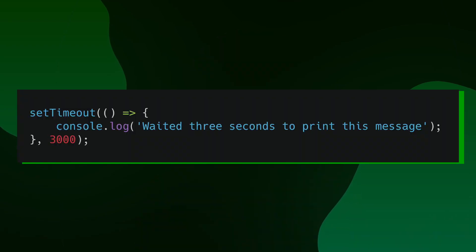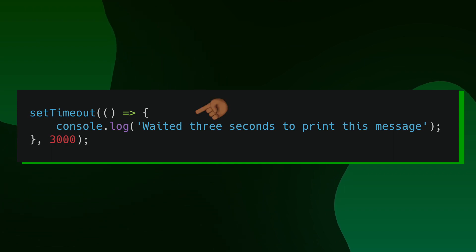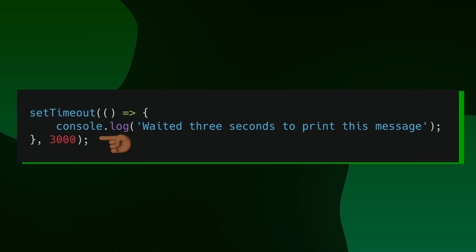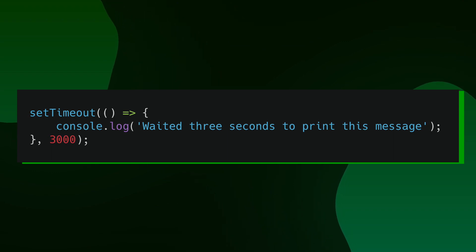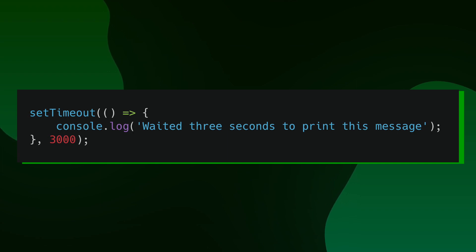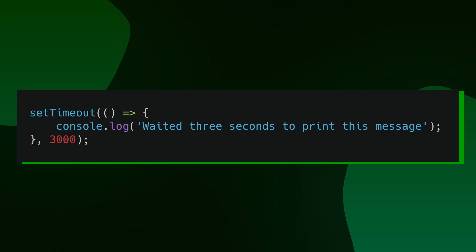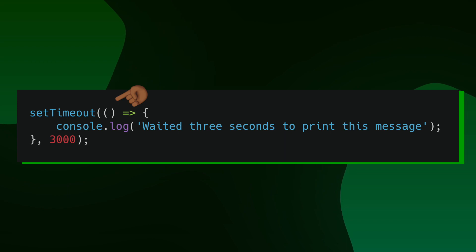First, we can take a look at the setTimeout function. What's going on with setTimeout is that it has two arguments — the first is the callback function, and the second is the number of milliseconds that need to be waited until the callback function can get executed. In this situation, inside of my callback function, I have a print statement that says 'waited three seconds to print this message out', and my second argument is 3000, meaning I have to wait three seconds for my callback to execute. In this case, my callback function isn't expecting any values to be passed over from setTimeout, so there are no arguments in this callback function.